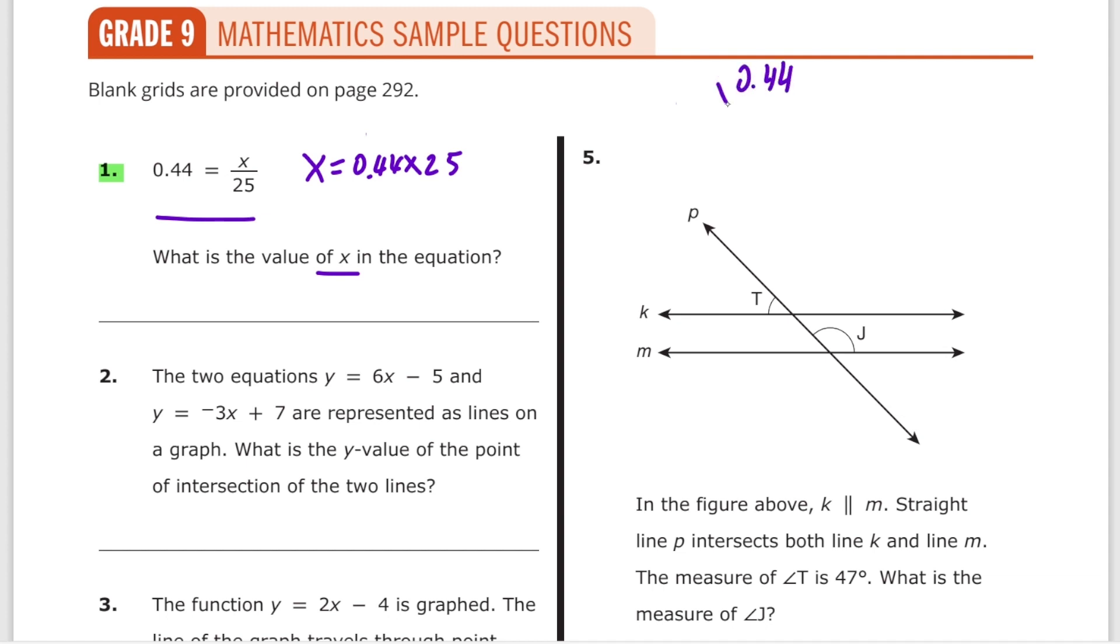0.44 multiplied by 25 as long multiplication will take you forever. What you should do instead is multiply 0.44 by 100 divided by 4, which is the same thing as multiplying by 25, which equals 0.44 times 100. That's equal to 44 divided by 4. The answer is 11. Nice and fast.